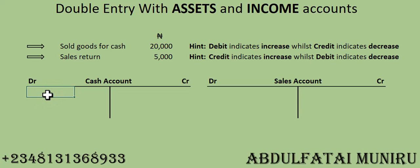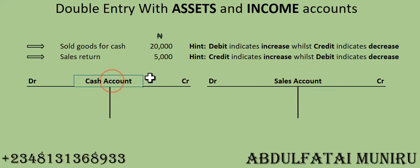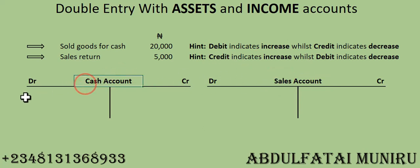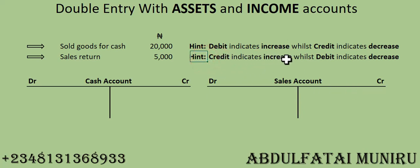We've decided that cash is the one receiving, so our cash is increasing. Remember, cash is an asset account, and a debit to an asset account indicates increase. While posting, we have two accounts: cash account and sales account. Cash account is receiving whilst sales account is giving — debit the receiver, credit the giver. Cash is increasing on the debit side, and sales is also increasing because credit indicates increase for an income account.